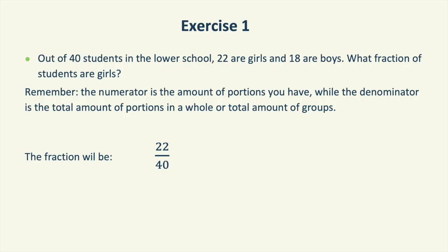Out of 40 students in the lower school, 22 are girls and 18 are boys. What fraction of students are girls? Remember, the numerator is the amount of portions you have, while the denominator is the total amount of portions in a whole or total amount of groups. The numerator will be the total number of girls, which is 22, and the denominator will be the total number of students we have, which is 40. Hence, our fraction would be 22 out of 40.